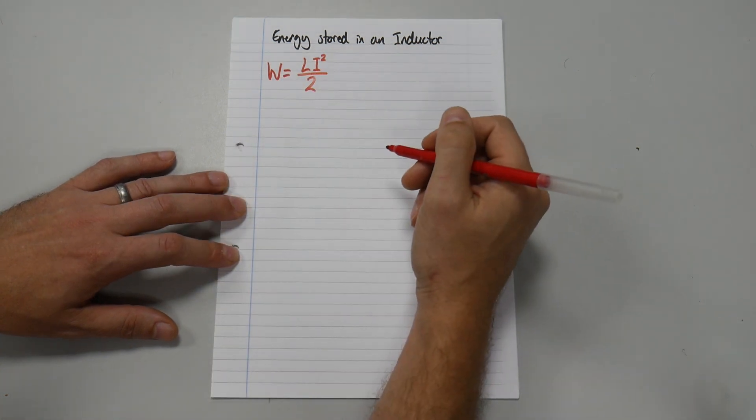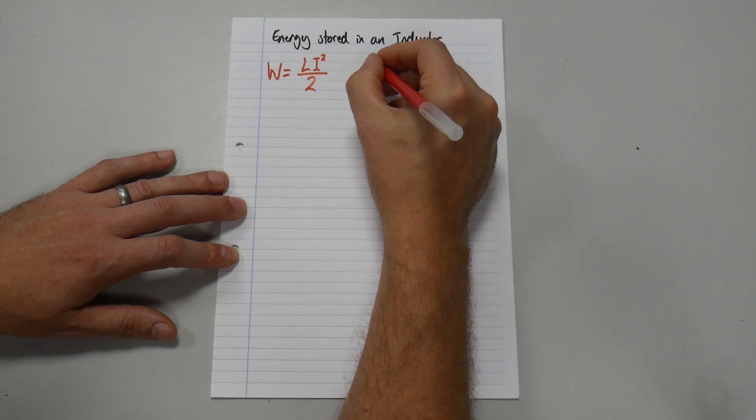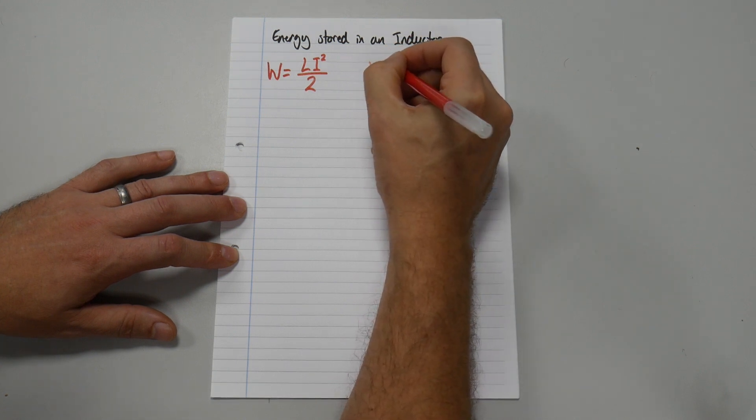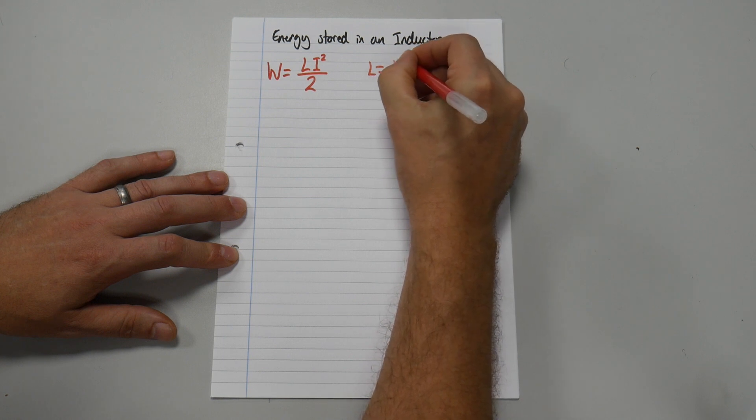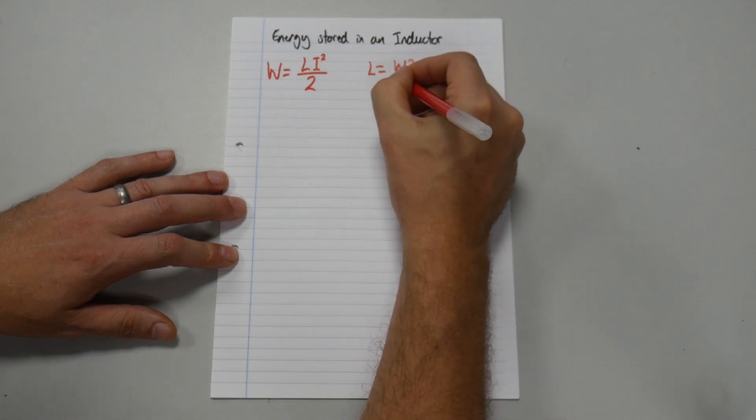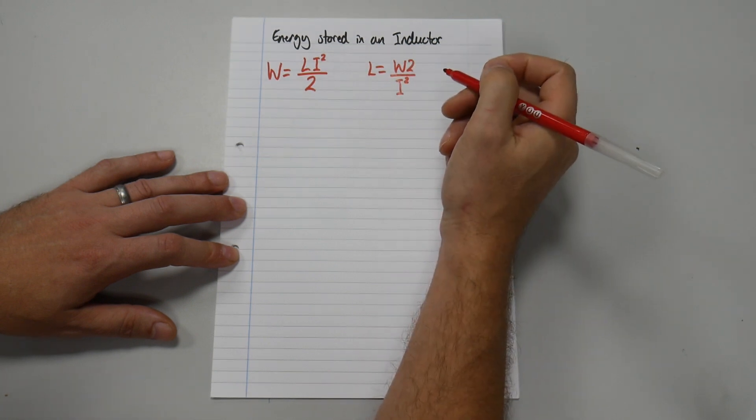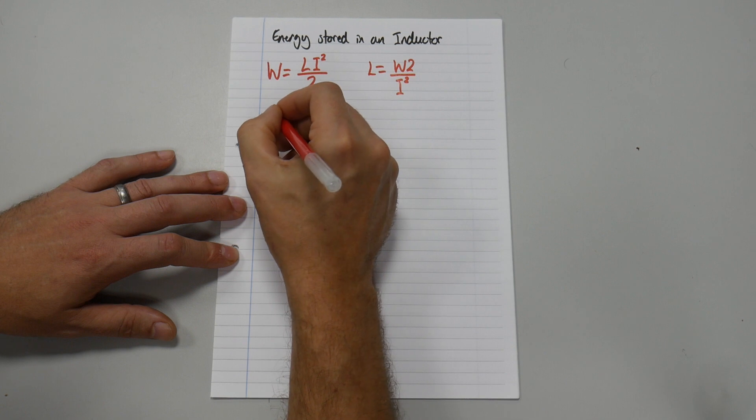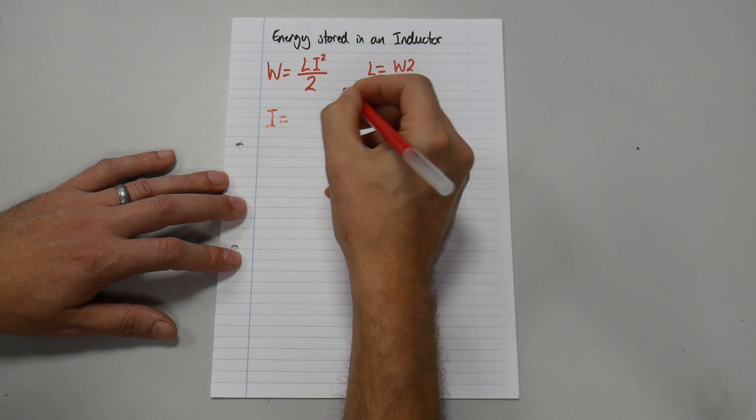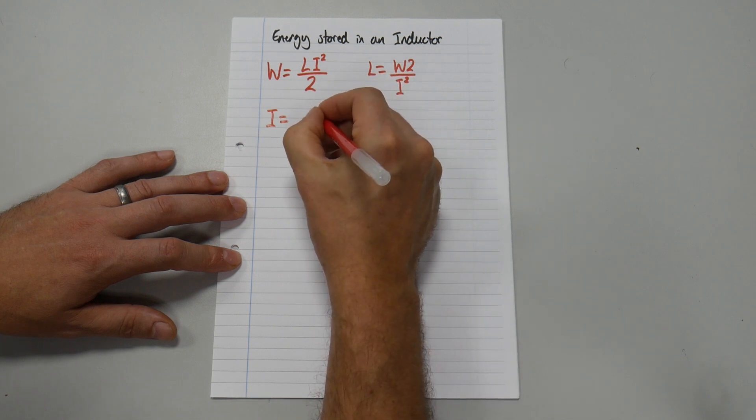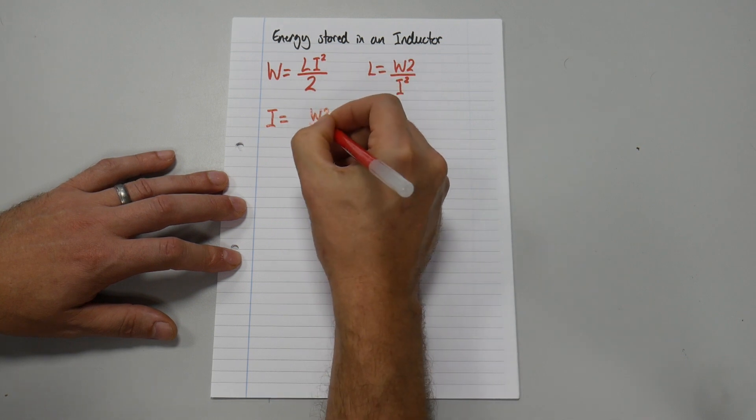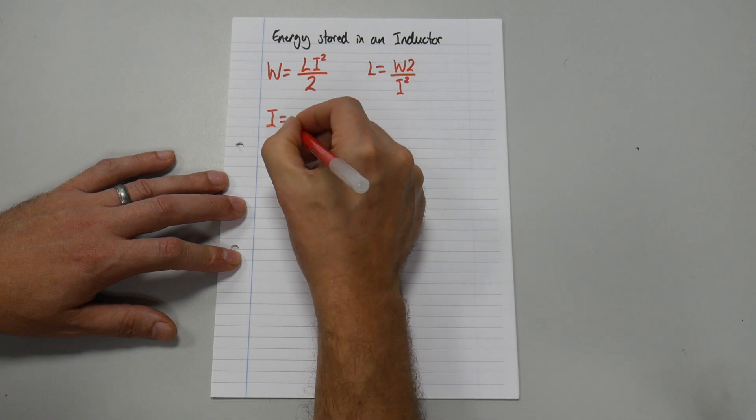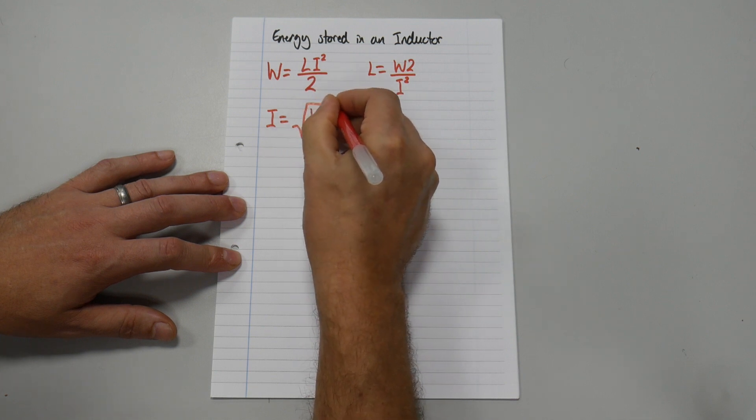And now let's transpose that formula for you. So the first one would be L equals W2 over I squared. And then transpose it for I equals W2 over L all squared.